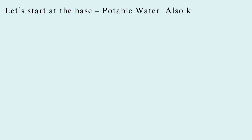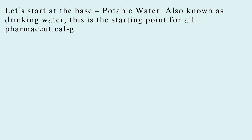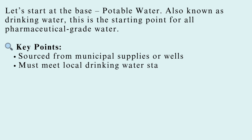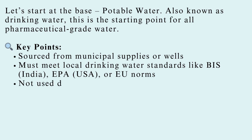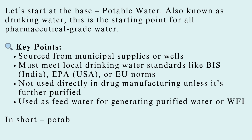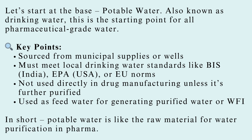Let's start at the base: potable water, also known as drinking water. This is the starting point for all pharmaceutical-grade water. It's sourced from municipal supplies or wells and must meet local drinking water standards like BIS (India), EPA (USA), or EU norms. It's not used directly in drug manufacturing unless further purified — it's used as feed water for generating purified water or WFI. In short, potable water is like the raw material for water purification in pharma.